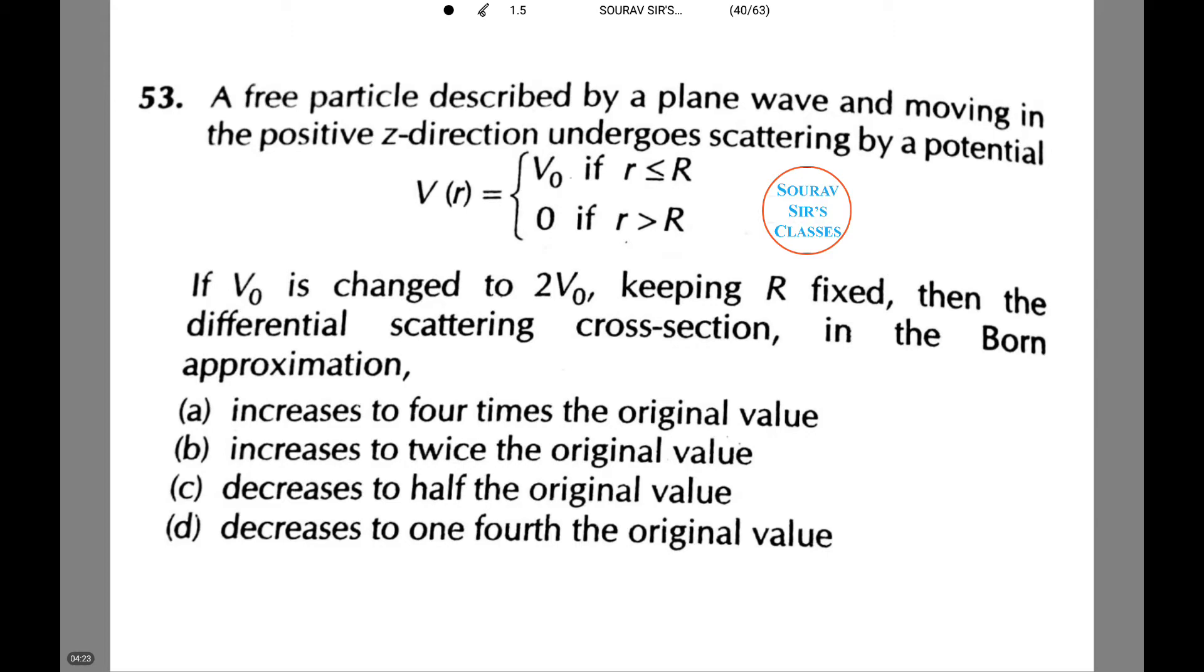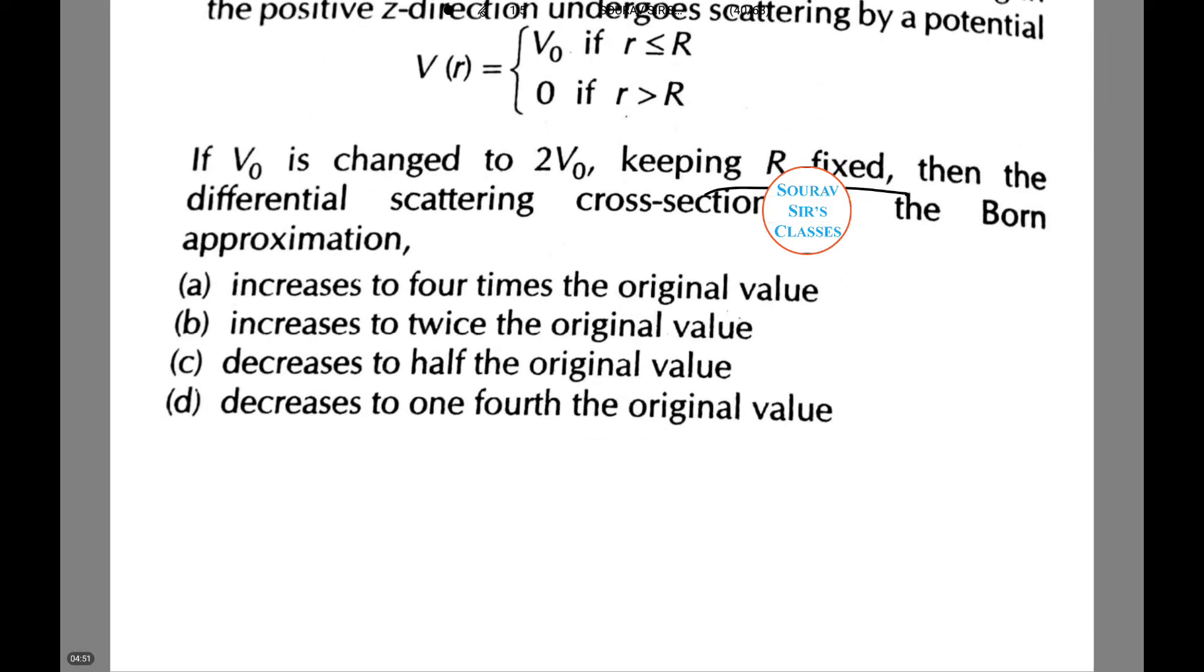Now in the next question, a free particle described by a plane wave and moving in the positive z-direction undergoes scattering by a potential V(r) equals V₀ if r ≤ R, and 0 if r > R. If V₀ is changed to 2V₀ keeping R fixed, then the differential scattering cross-section in the Born approximation comes to...